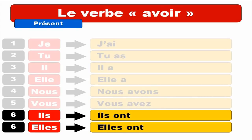And then feminine form ELLES — same thing. ELLES ONT. Repeat. ELLES ONT. Just before leaving you, keep in mind that this liaison, this link, is actually quite soft — it's not really strong. It's especially important for ILS ONT and ELLES ONT, because if you make it too strong, it would sound like ILS SONT, which is the verb ÊTRE — to be.